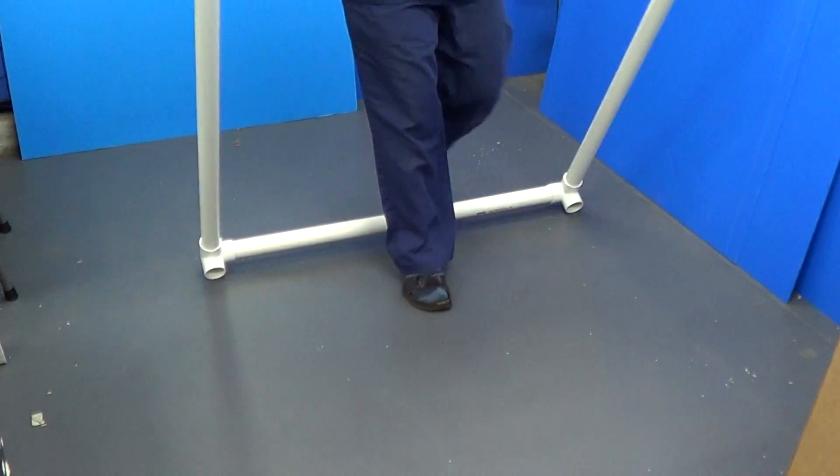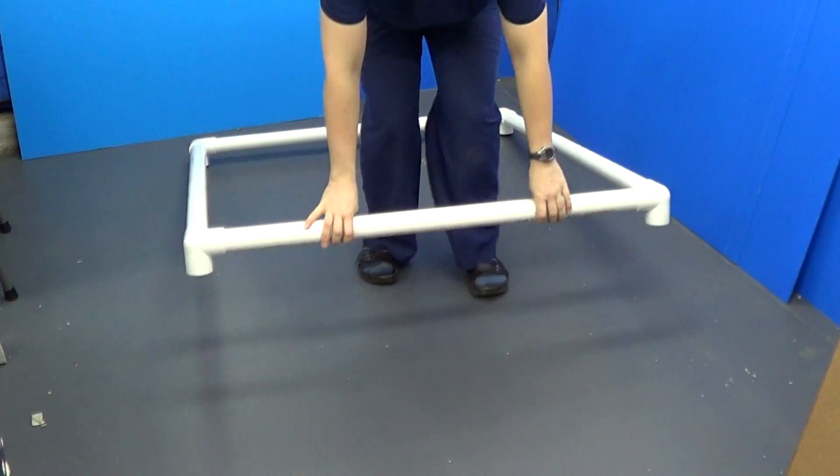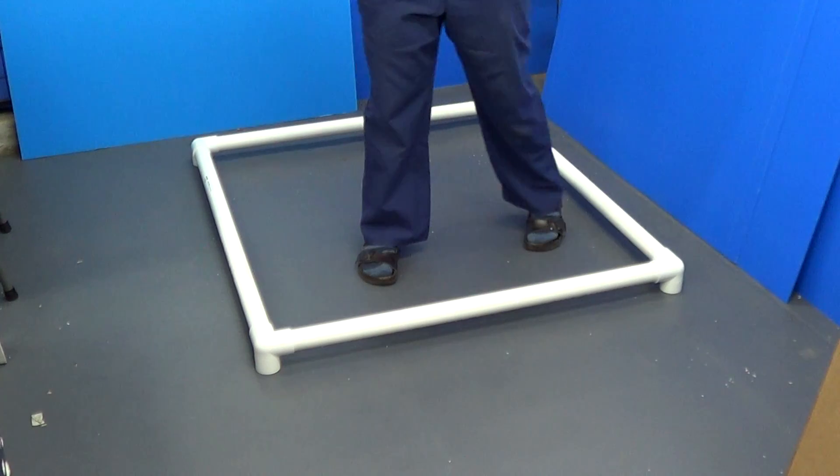And you might have to use a hammer or mallet to get them in secure, and there is your Puppy Rail.